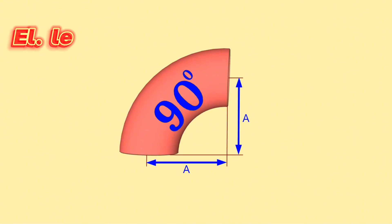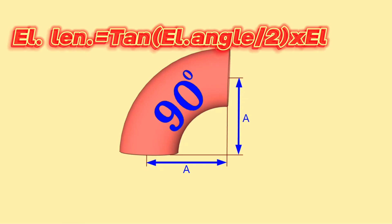Formula 1: Elbow length equals tangent of elbow angle divided by 2, times elbow radius.